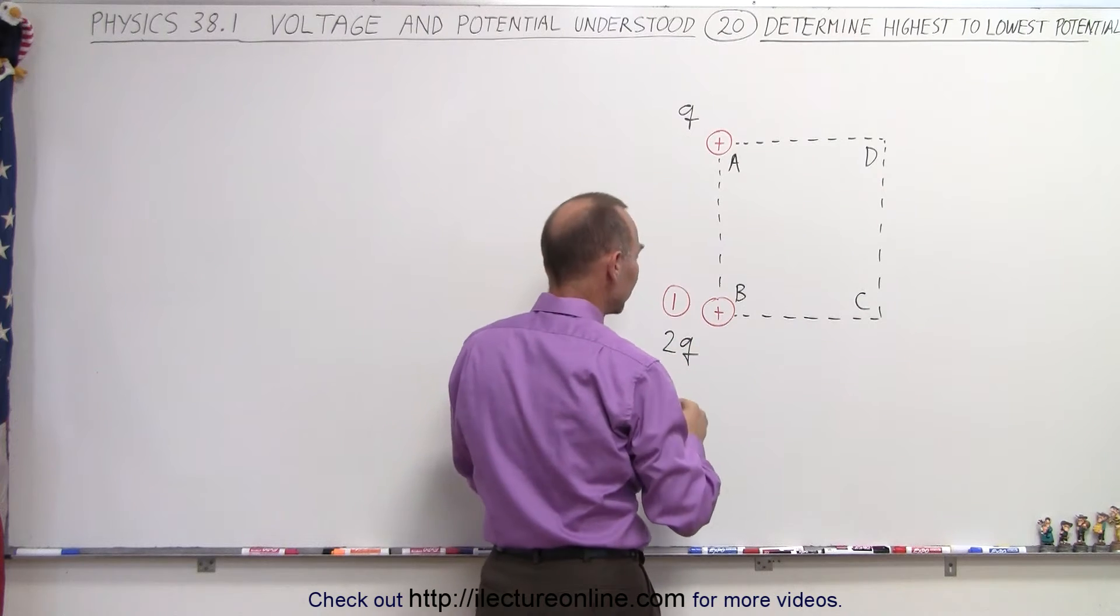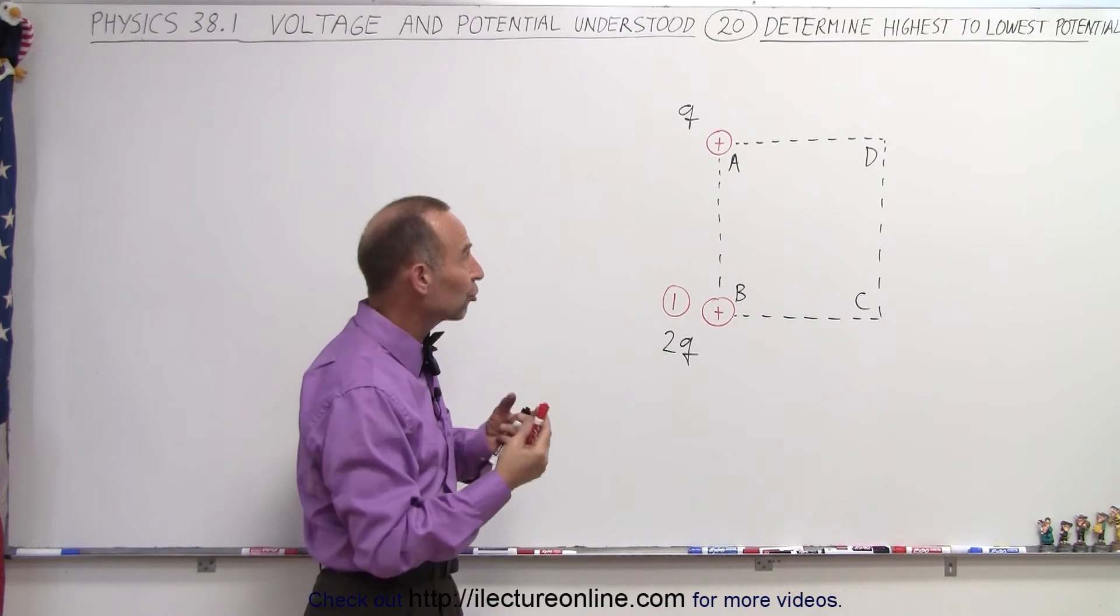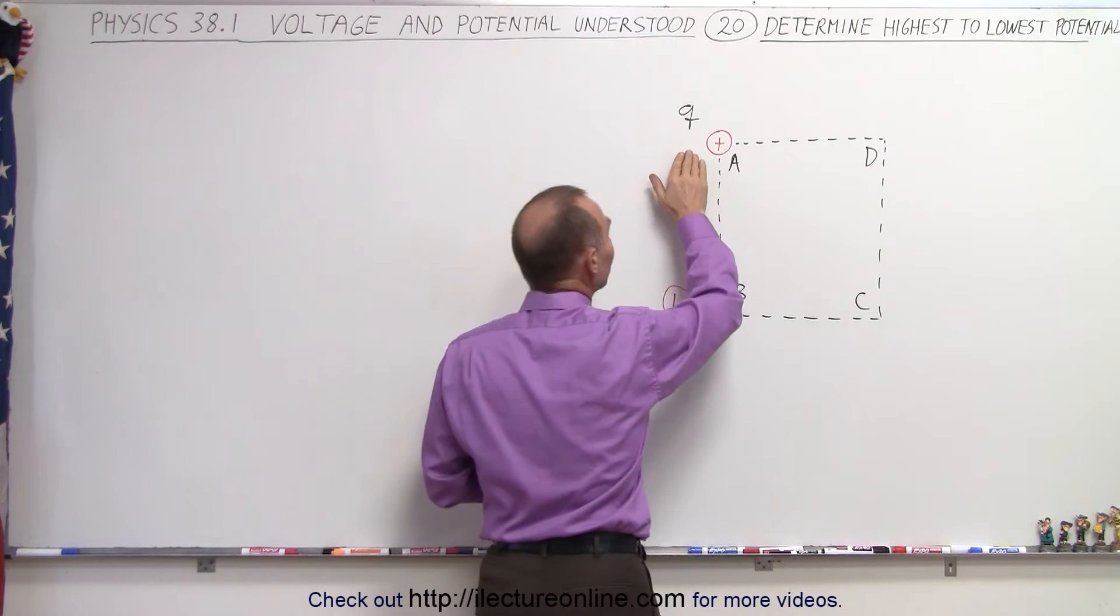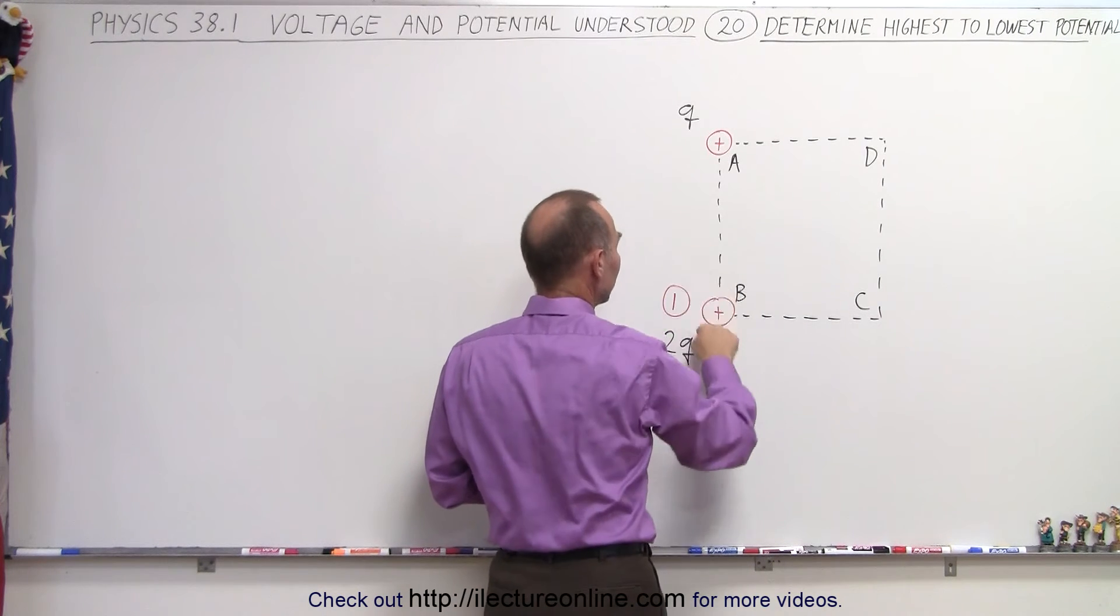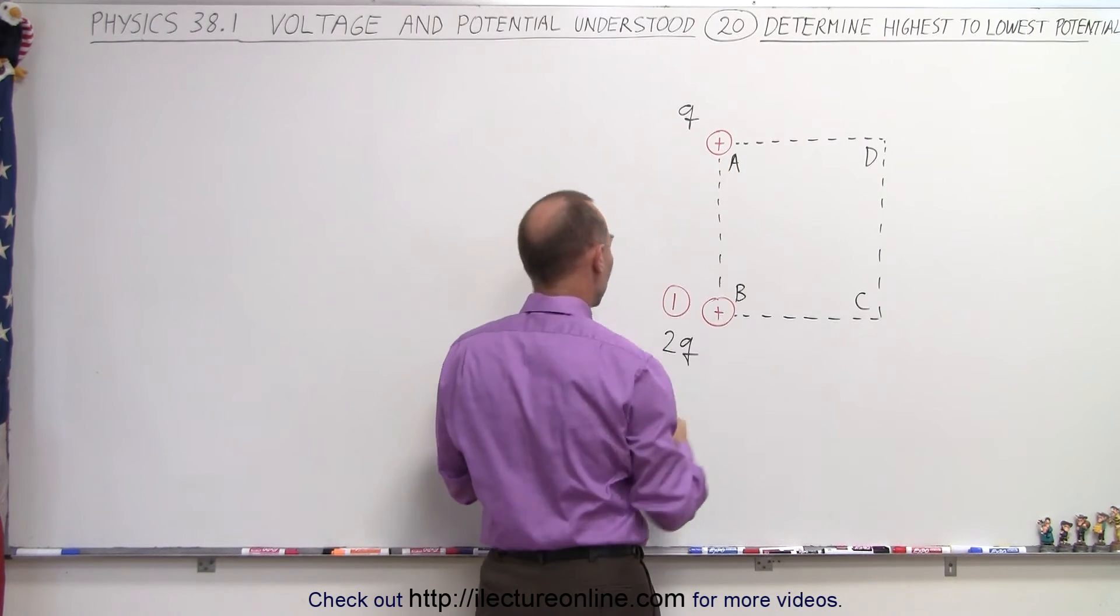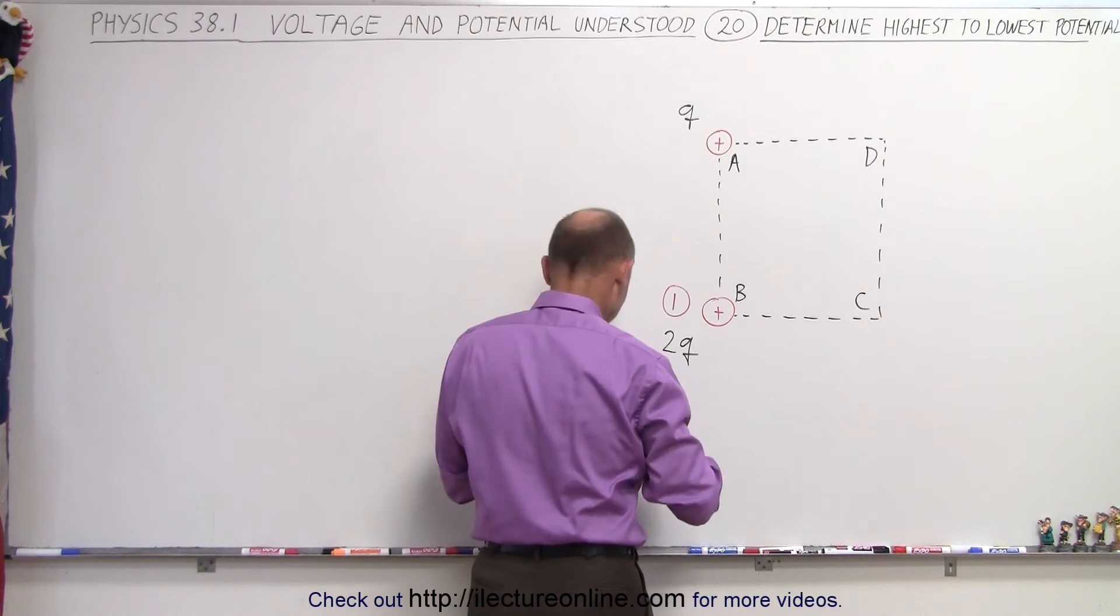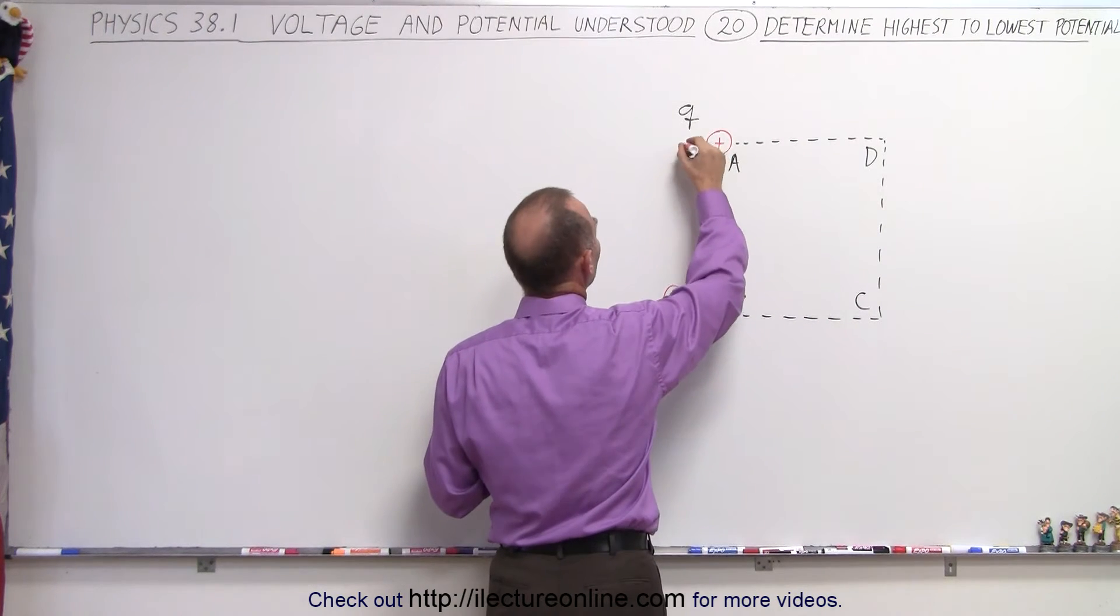Then, of course, there's only three corners left, and only one of those three corners has charge, so this must be the second highest. This is lower than this because it only has half the charge, so close to this charge, that would be half the potential. So this is rank number two.